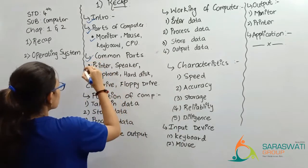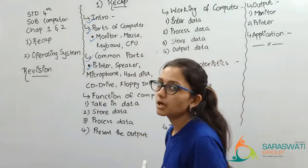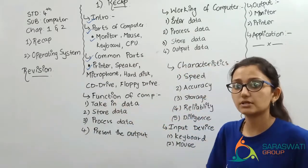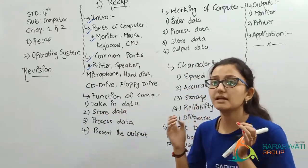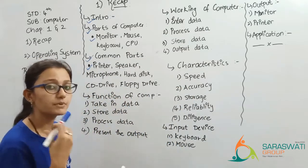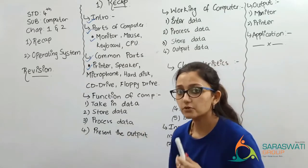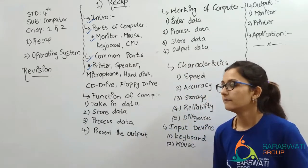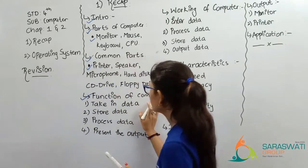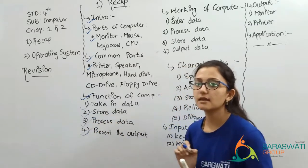So those were the common parts of the computer. Now we are coming to the functions of the computer. The functions are: taking data — the computer takes in data; then storing data — the computer stores that data; then processing data — the computer processes that data; and finally presenting the output — the output is shown to us.